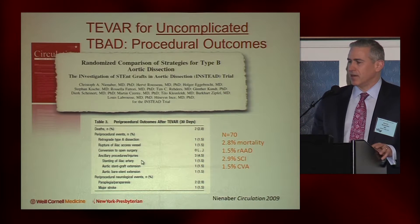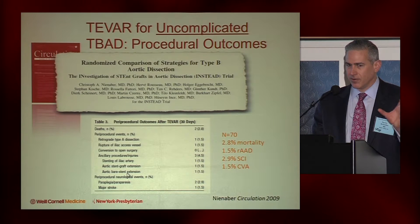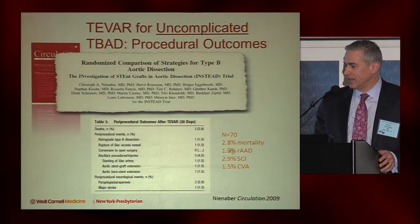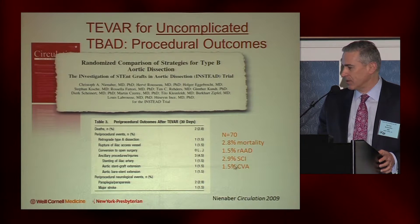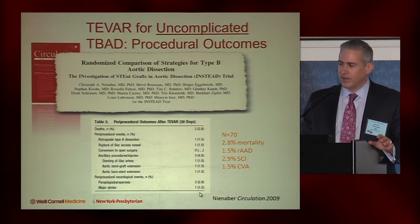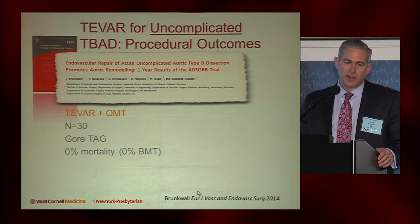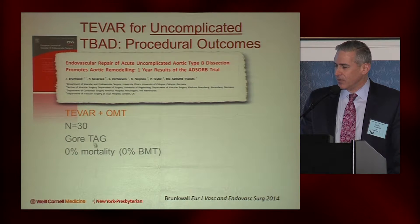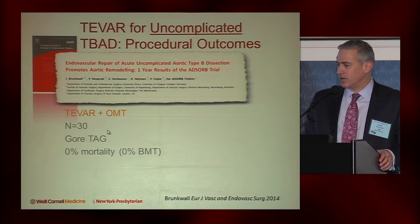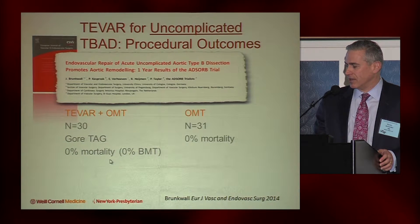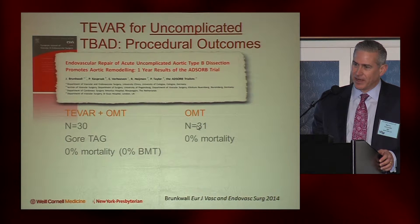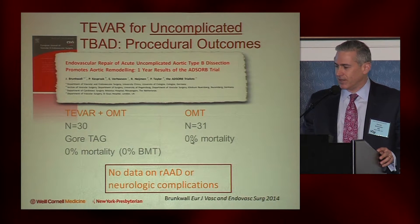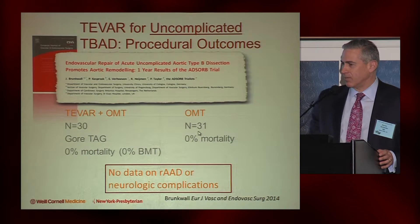Looking at the uncomplicated cohort undergoing TVAR — this is the INSTEAD data — there was about 3% mortality, one retrograde aortic dissection, and some neurologic complications, albeit relatively low numbers. The ABSORBED trial data in uncomplicated dissections undergoing TVAR with the Gore-Tag device showed low mortality and seemingly good outcomes, but outcomes were equally good in the optimal medical therapy group too. So we haven't really shown any benefit, and they didn't provide data on retrograde dissections or neurologic complications in either cohort.